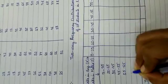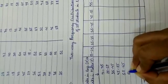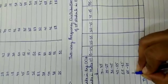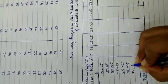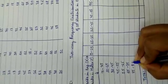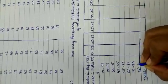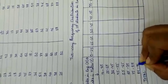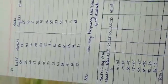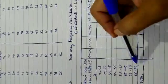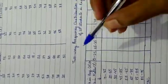So the Y class intervals are: 15–25, 25–35, 35–45, 45–55, 55–65, 65–75, 75–85, and 85–95. The table format is now completely ready, with the total as the last row and last column.